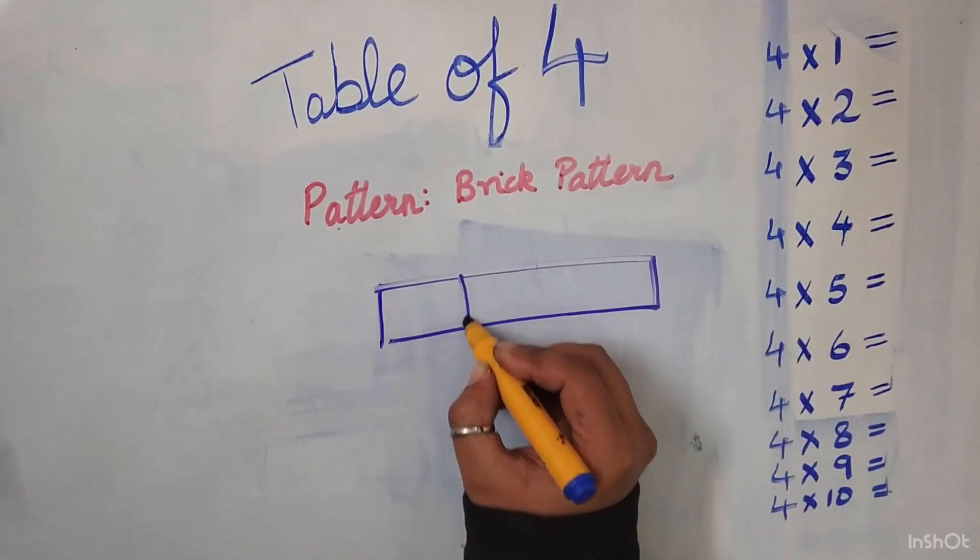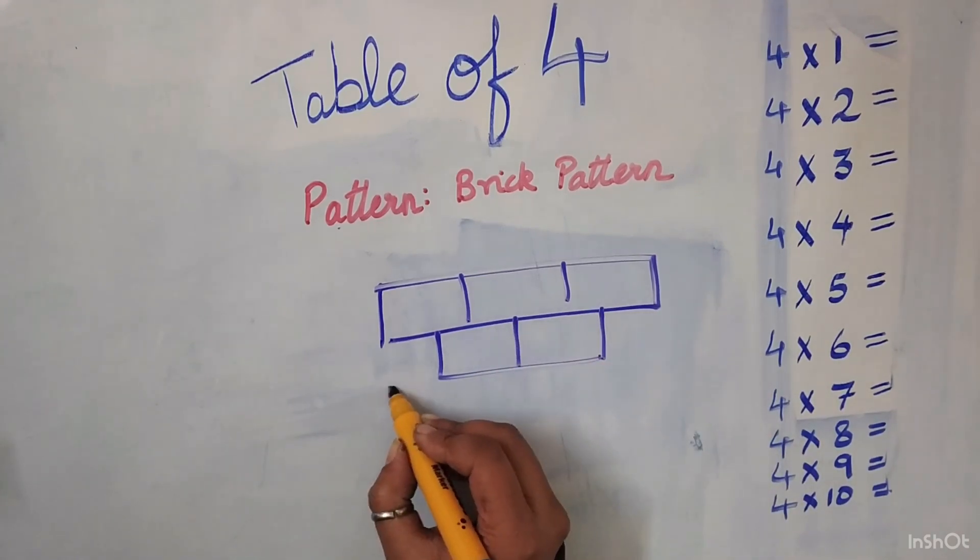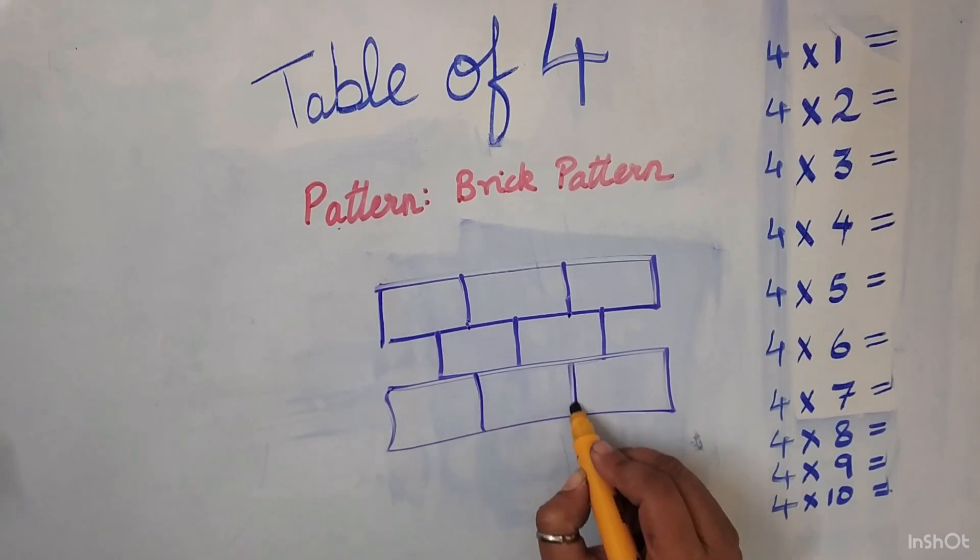First we will make the brick wall: 3 bricks, 2 bricks, 3 more bricks, and 2 bricks again.